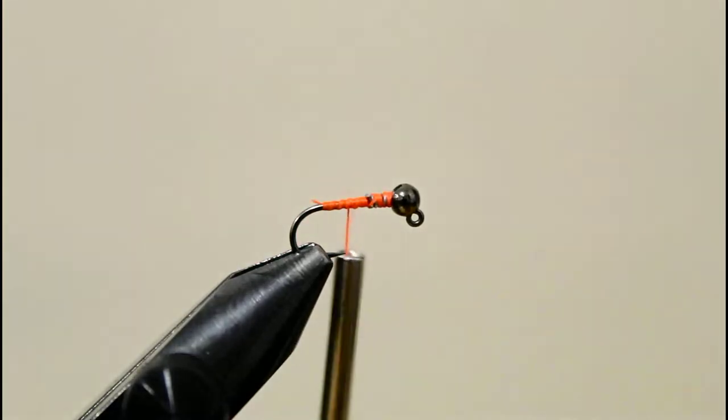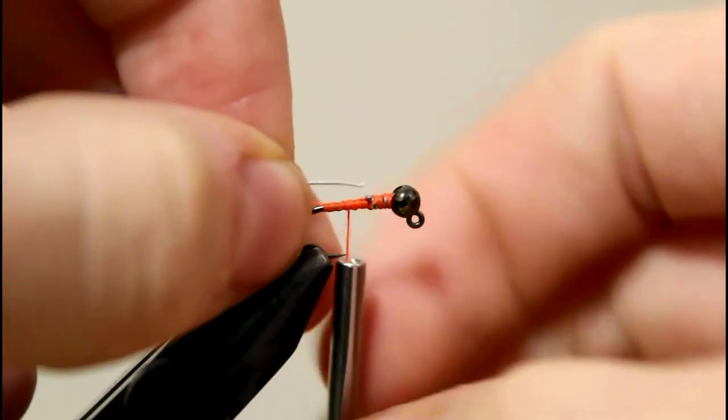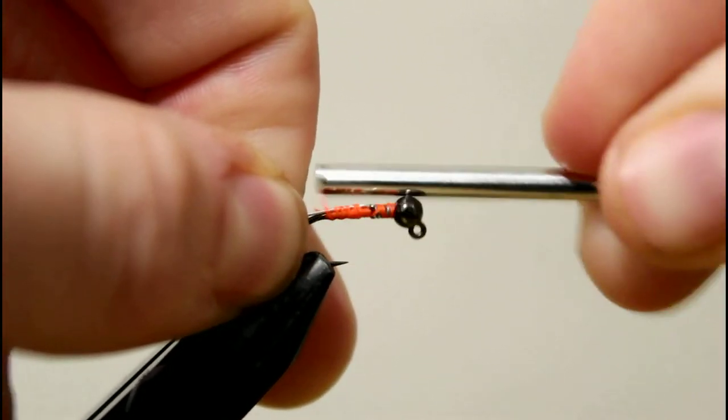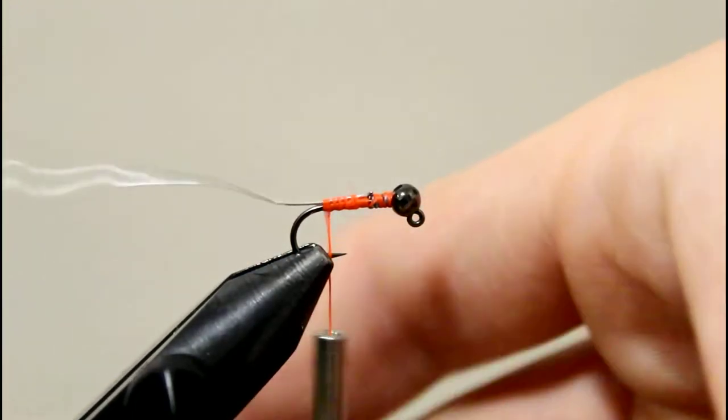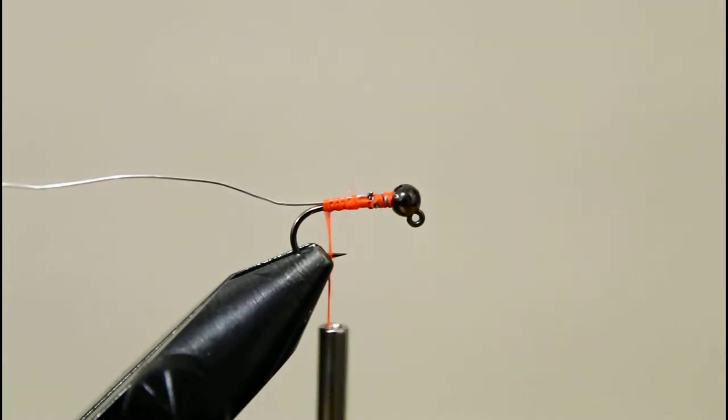Next I'm gonna be using some silver wire—silver Ultra Wire, I believe it's their medium size. I'm gonna take a two inch piece, start just behind those lead wraps, and wrap it backwards. Then I'm gonna take some turkey feather—I took two strands off the feather—and I'm gonna tie those in back there as well and wrap forward.